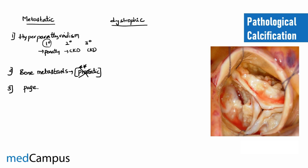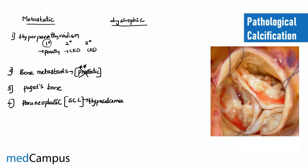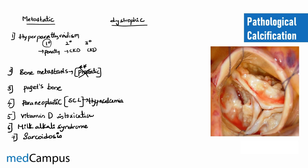Paget's disease of the bone — specifying bone because there is also Paget's disease of the nipple — can also lead to metastatic calcification. Some paraneoplastic syndromes are another cause. For example, in small cell carcinoma of the lung, the most common paraneoplastic manifestation is hypercalcemia, which leads to calcium deposition outside the skeletal system. Two more examples are vitamin D intoxication and milk-alkali syndrome, both of which lead to metastatic calcification.